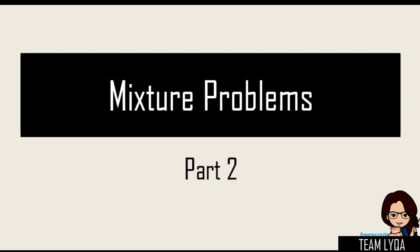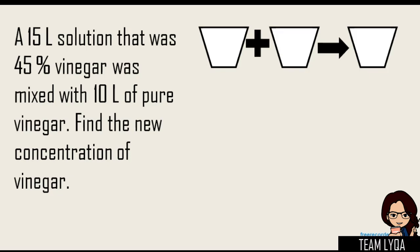So this is Part 2 of the mixture problems. This time we're going to talk about the special cases. For example, this question: 'A 15-liter solution that was 45% vinegar was mixed with 10 liters of pure vinegar. Find the new concentration of vinegar.' The concept I want you to understand here is the concept of pure vinegar. When we say pure vinegar, remember that pure vinegar means 100% — it has no mixture. It's pure vinegar; vinegar lang ang laman.